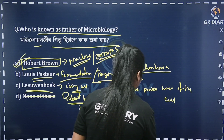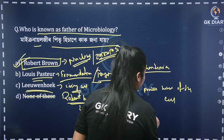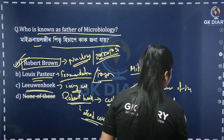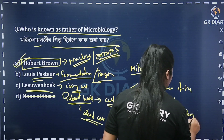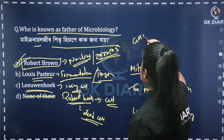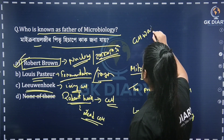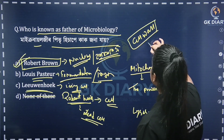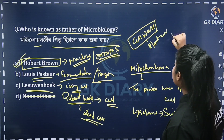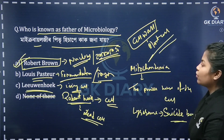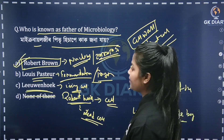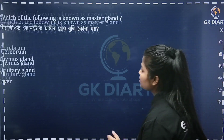And what do you know about the lysosome? Suicide bag. The cell is present. The cell is only a cell membrane. This question is how to ask. Next question.